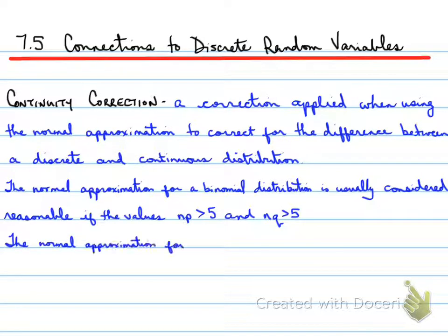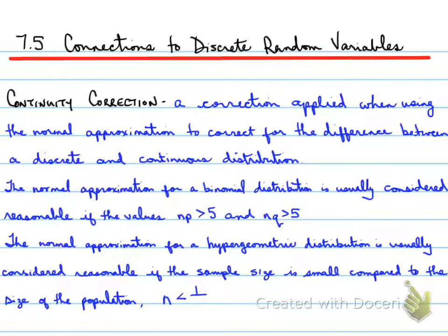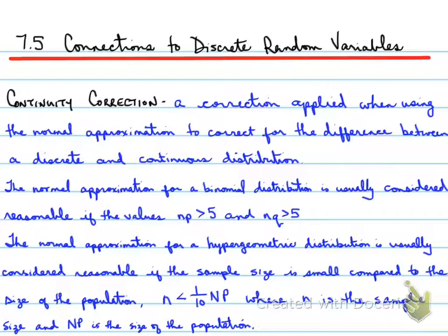The normal approximation for a hypergeometric distribution is usually considered reasonable if the sample size is small compared to the size of the population — i.e., the sample size is less than one-tenth of the actual population. As long as the sample size is less than 10% of the actual population size, a normal approximation for a hypergeometric distribution is considered reasonable.